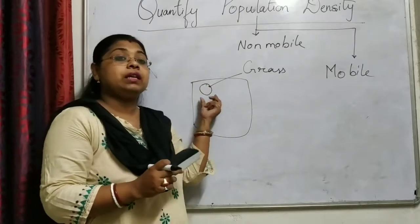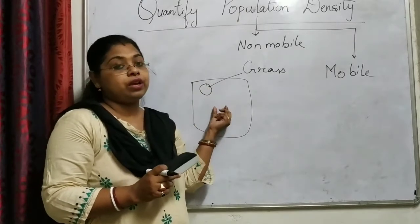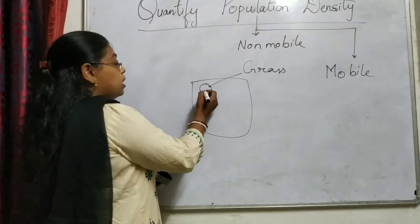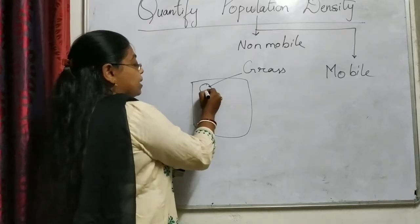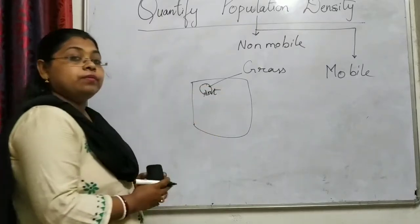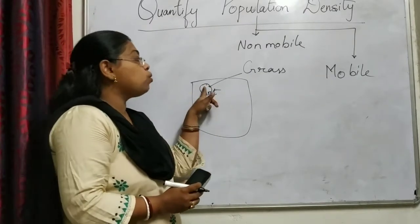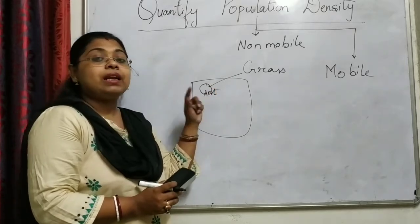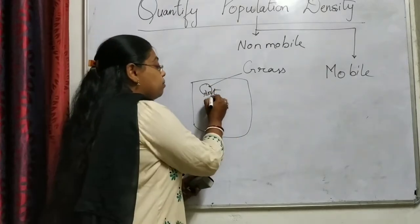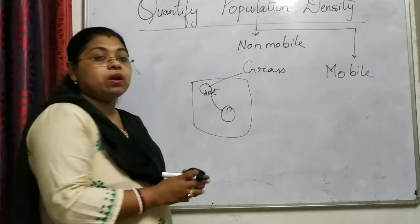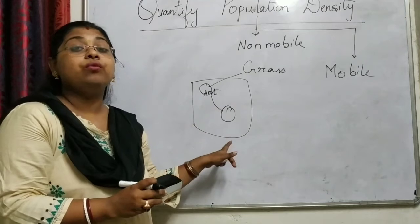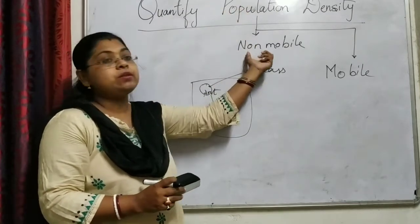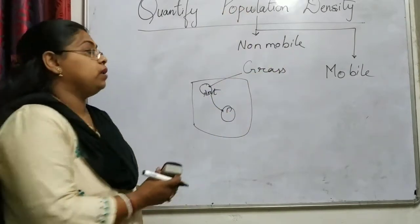That grass will remain in that location because it is a fixed variety. Now if there is an ant — once located in this patch of region, after a few minutes it can move to another patch because it is a mobile organism. So there are populations of two types: non-mobile and mobile.